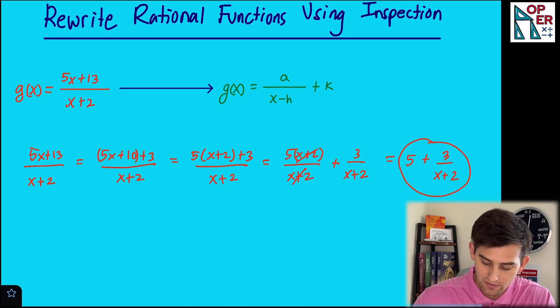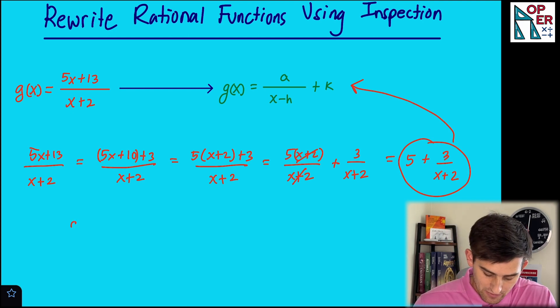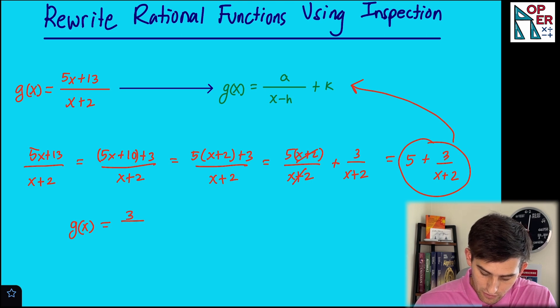And if you notice, this part right here looks exactly like what we're looking for. We just need to rewrite it after g of x. So now we could say g(x) equals 3 over (x plus 2) plus 5.